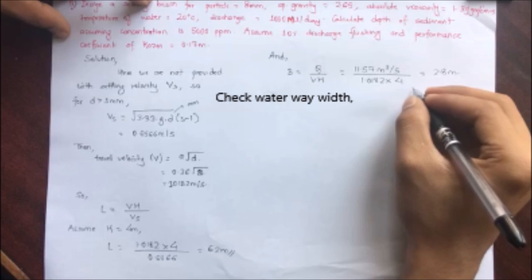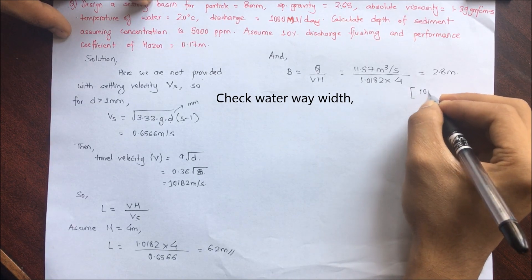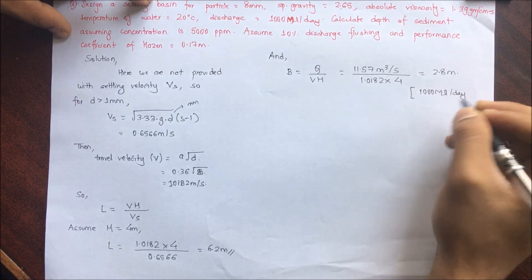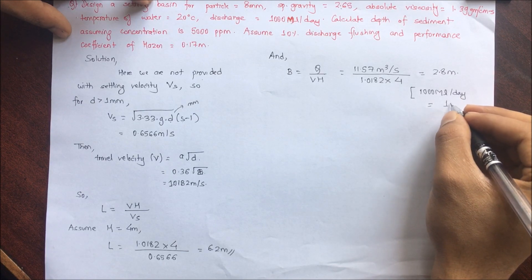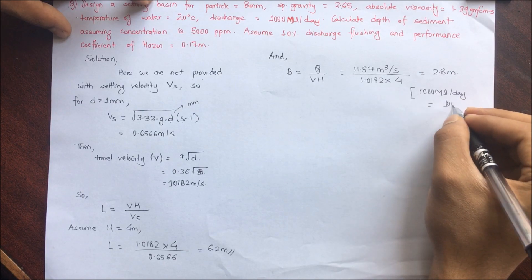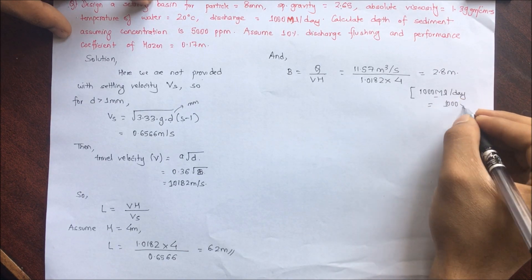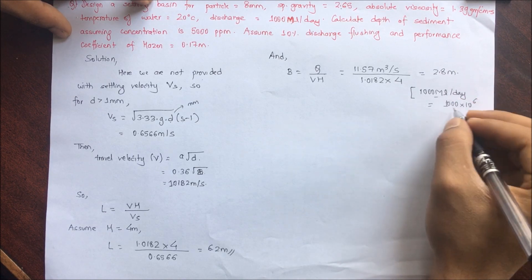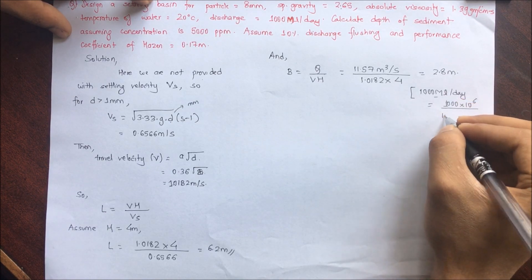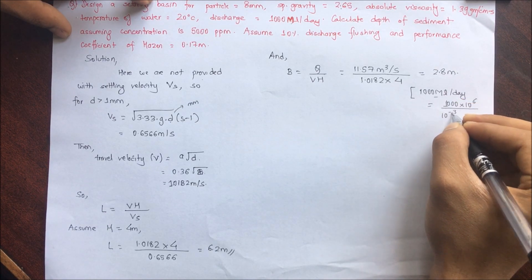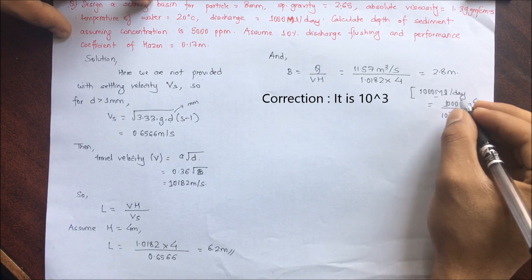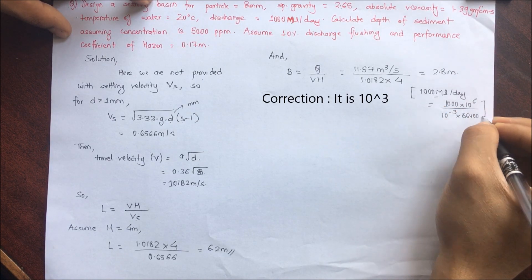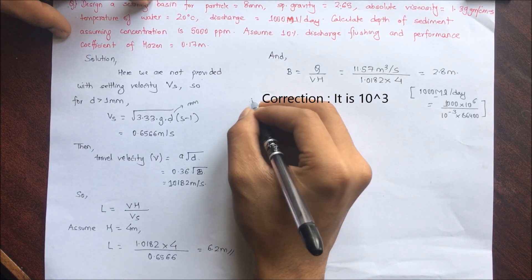For the unit conversion: 1000 million liters per day = 1000 × 10⁶ liters/day. Converting liters to m³ (multiply by 10⁻³) and days to seconds (divide by 86400 s/day), we get 11.57 m³/s.